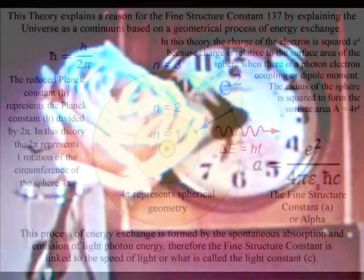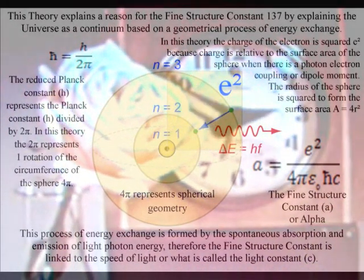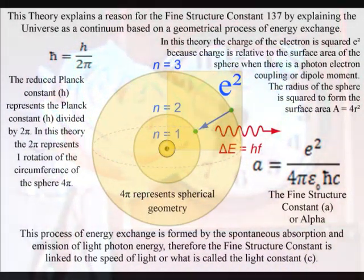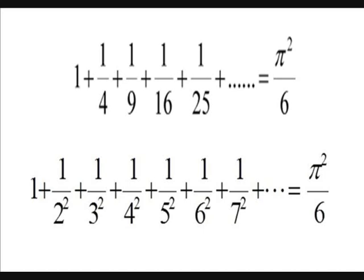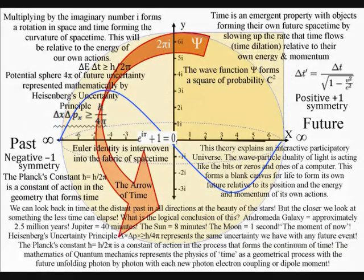The geometry of this process is reflected in this infinite series with the potential for each denominator to be squared with the exact sum remaining the same at pi squared divided by six. In this theory we have a process of continuous energy exchange that forms the ever-changing world of our everyday life.